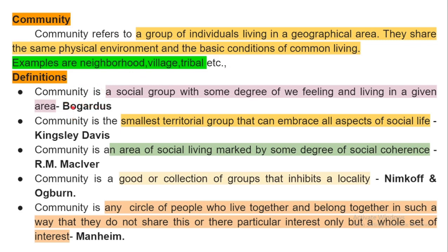The first important definition of community was given by Bogardus, who said that community is a social group with some degree of 'we-feeling,' living in a given area. He emphasized that sense of 'we-feeling' and shared locality.